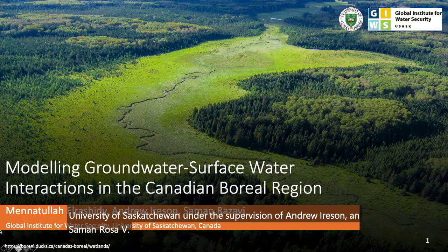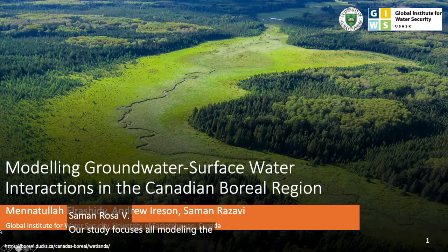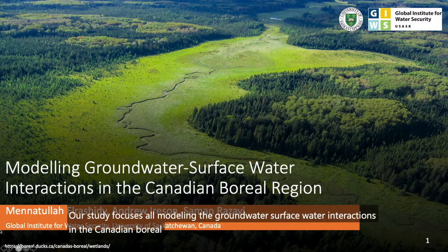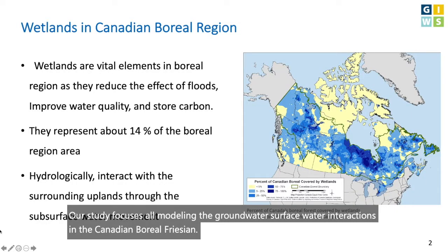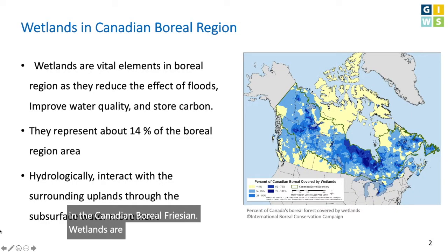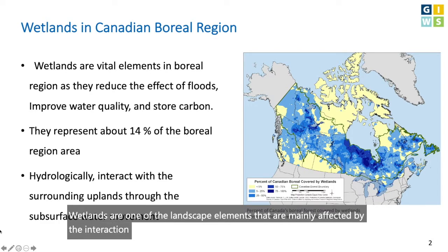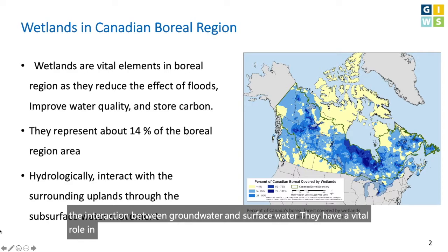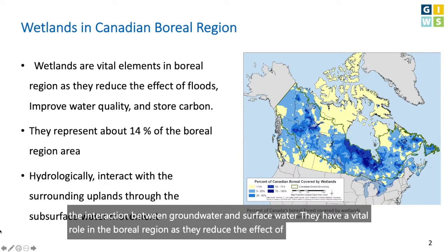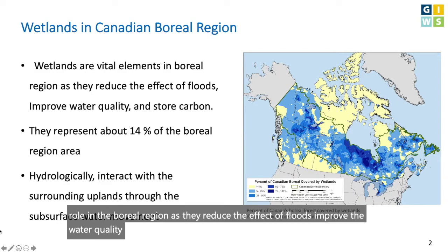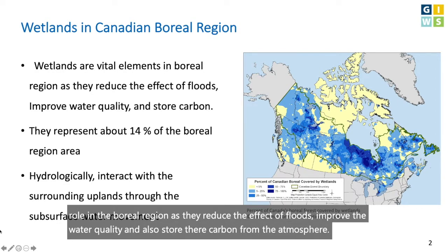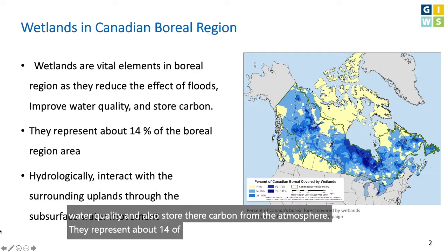Our study focuses on modeling groundwater-surface water interactions in the Canadian Boreal region. Wetlands are one of the landscape elements mainly affected by this interaction. They have a vital role in the Boreal region as they reduce the effect of floods, improve water quality, and store carbon from the atmosphere. They represent about 14% of the whole area of the Boreal region.